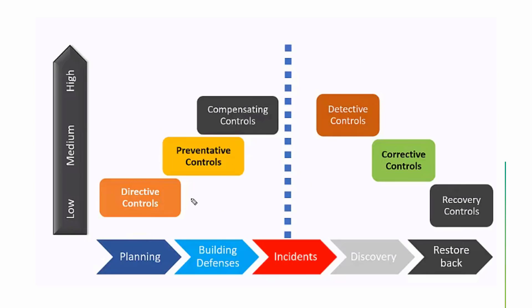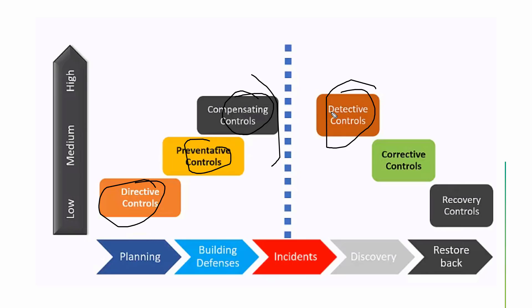Best example: company policy says no social media 9 to 5 — directive control. A warning is added that violators will be terminated — deterrent control. Then we introduce preventive control by installing proxies to block the site. We also install endpoint DLP — a compensating control. If by hook or crook the user opens the site, a SIEM records the activity — detective control. Then corrective control isolates the system and terminates the candidate. Recovery means clean installation and restoring the system back to production.